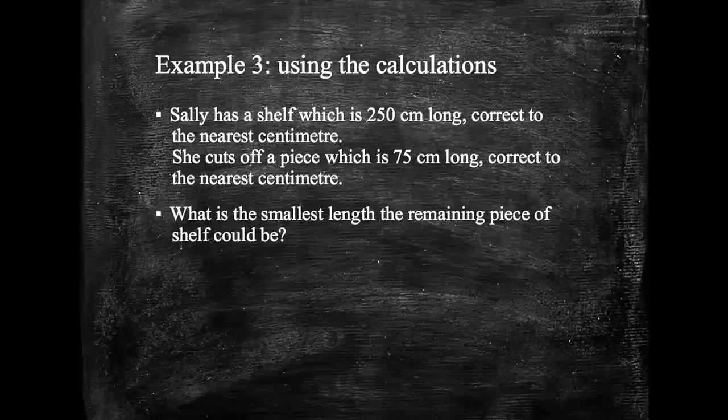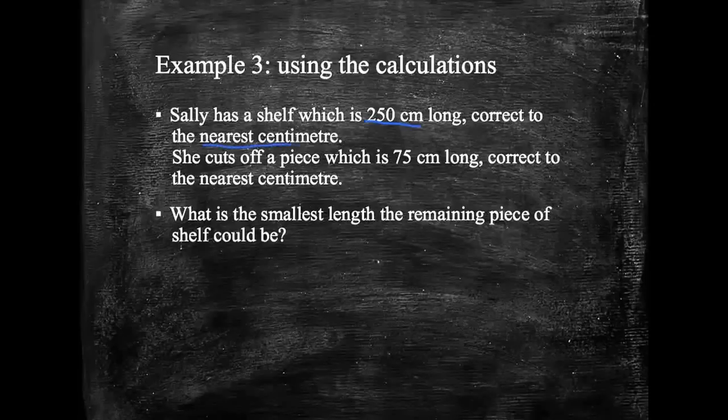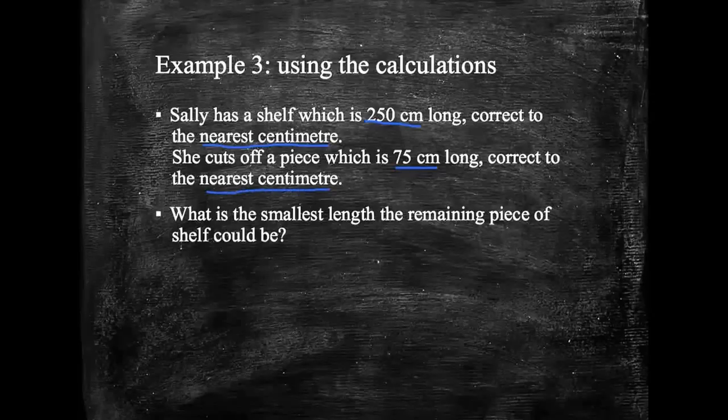Sally has a shelf which is 250 centimeters long, correct to the nearest centimeter. So 250 to the nearest centimeter. She cuts off a piece which is 75 centimeters long to the nearest centimeter. What's the smallest length the remaining piece of the shelf could be?